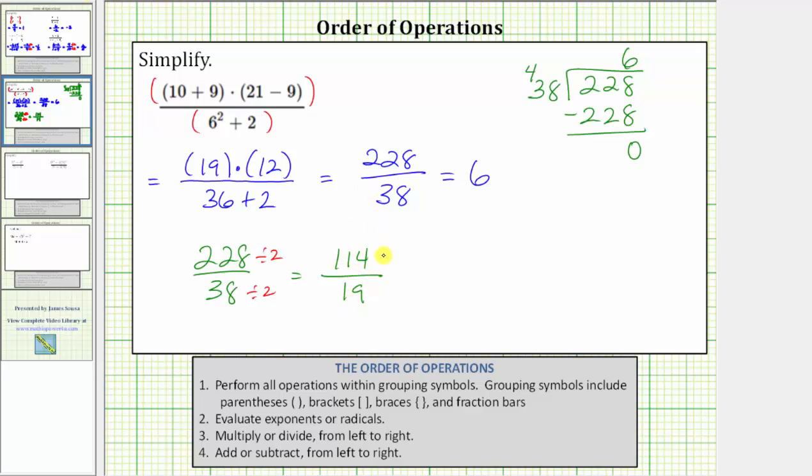To simplify further, we divide the numerator and denominator by 19. 114 divided by 19 does equal 6, and 19 divided by 19 equals 1, which does simplify to 6. I hope you found this helpful.